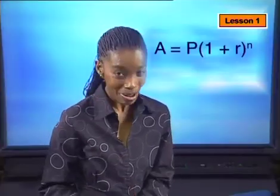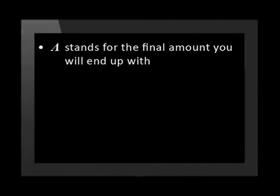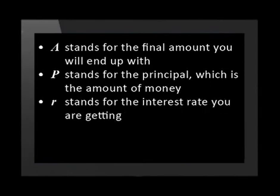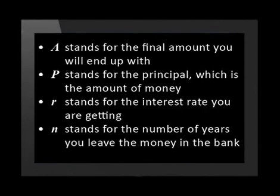Can we go through that again, please? It's as easy as ABC. A stands for the final amount you'll end up with. P stands for the principal, which is the amount of money you begin with. R stands for the interest rate you are getting. N stands for the number of years that you leave the money in the bank. I've got to admit, this is not too bad. But how do we make it all work?